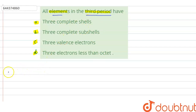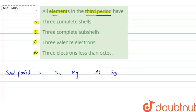First of all, let us write the elements of the third period. In the third period, we have sodium, magnesium, aluminium, silicon, phosphorus, sulfur, chlorine and argon. These are the elements of the third period.